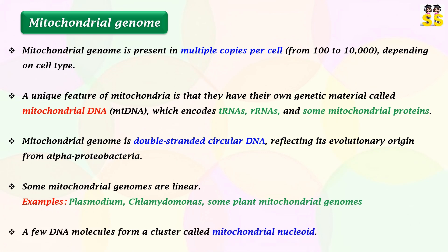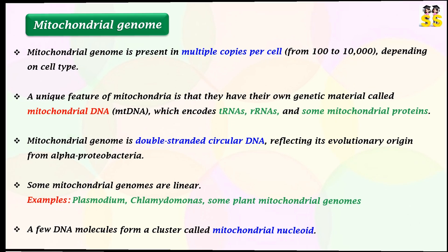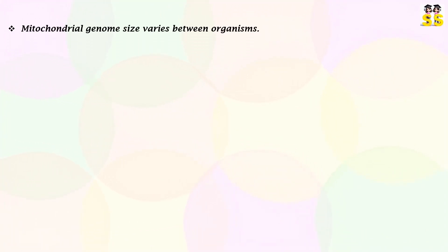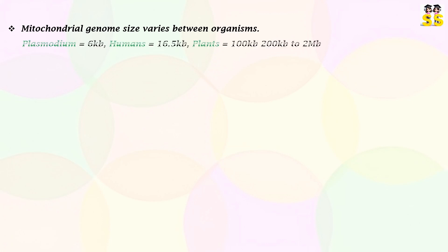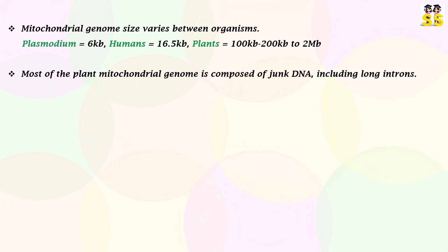The region where a cluster of DNA molecules are formed is called the mitochondrial nucleoid. The size of the mitochondrial genome varies between organisms. For instance, in Plasmodium it is 6 kb, in humans 16.5 kb, and about 100 kb to 200 kb to 2 megabases in plants. Most of the plant mitochondrial genome is composed of junk DNA, including long introns.